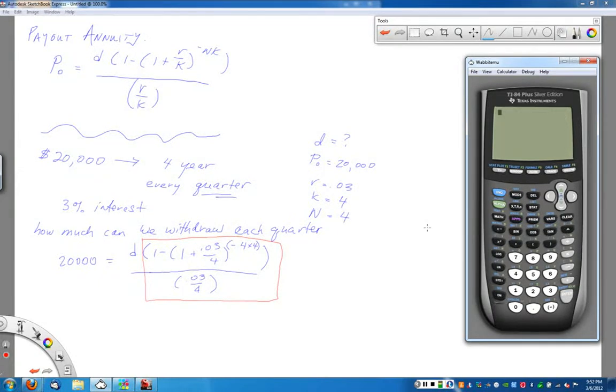So, let's clear our screen and look at what happens. We start with the parentheses on top there. 1 minus, and then introduce the second set of parentheses. Then it's going to be 1 plus 0.03 divided by 4. Close the parentheses, and now I want to raise this 1 plus 0.03 divided by 4, so use the caret button to take that to a power. And then use the parentheses to make sure everything gets in the exponent there, to the negative 4 times 4. Close the parentheses.